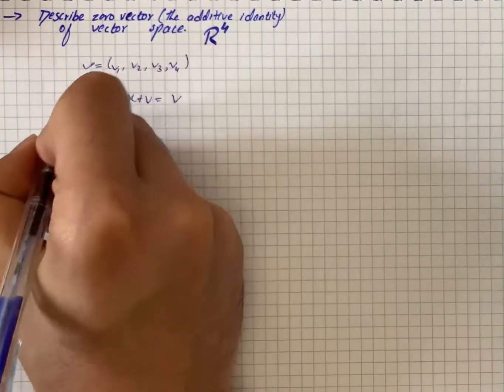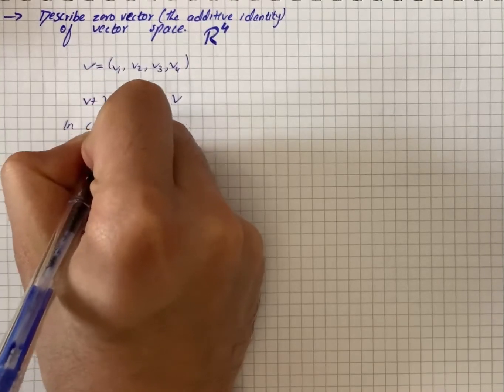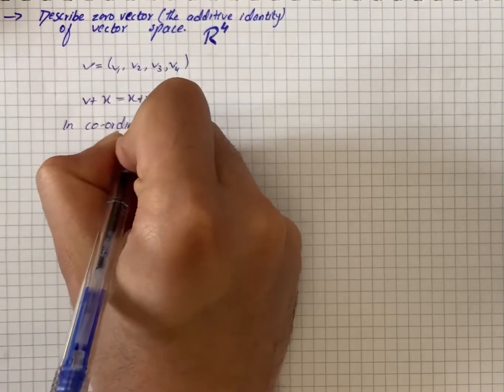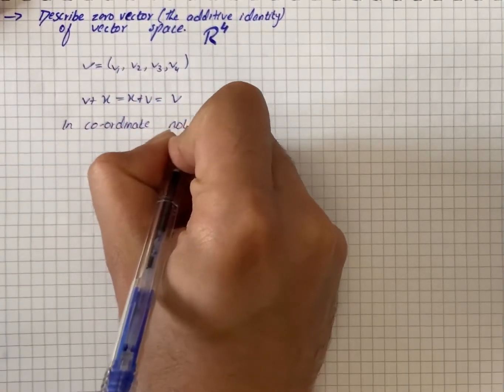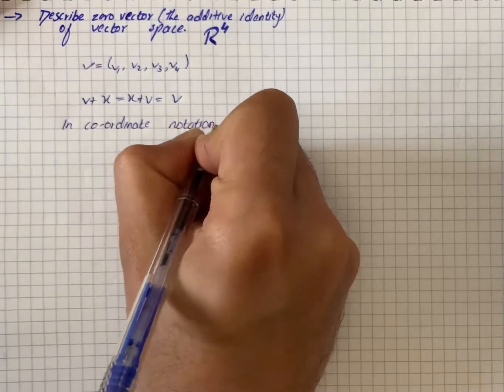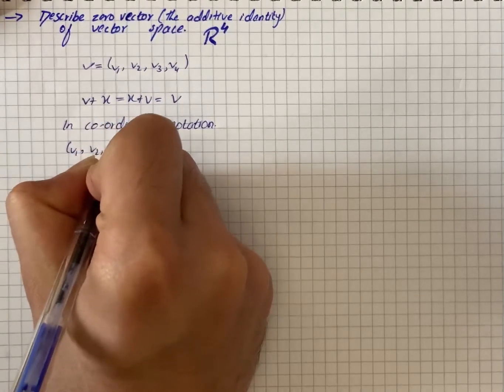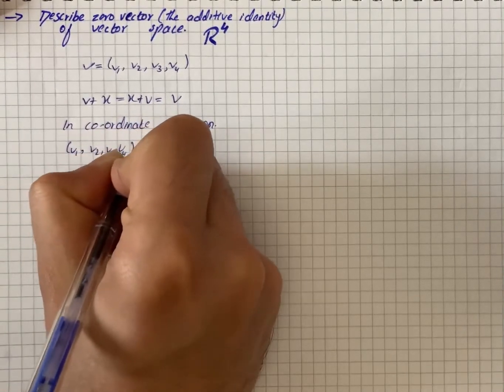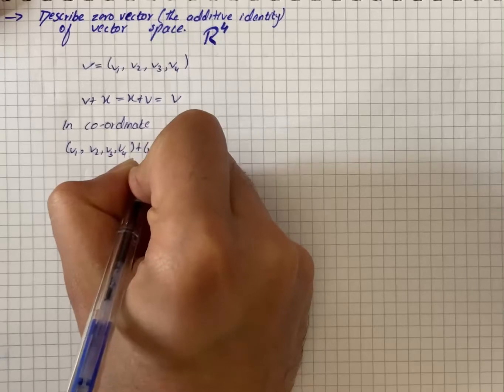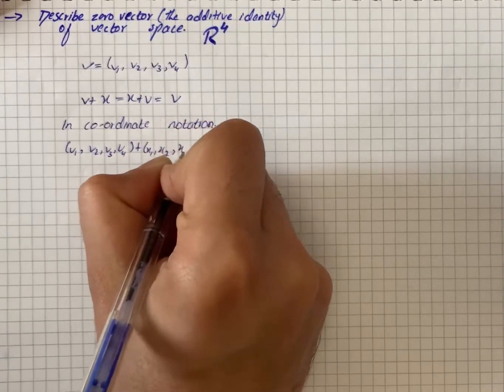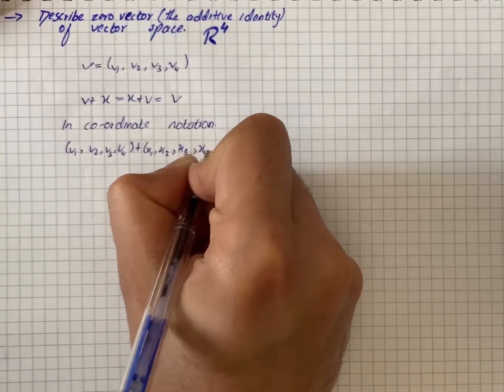In coordinate notation, we have (V1, V2, V3, V4) plus (X1, X2, X3, X4).